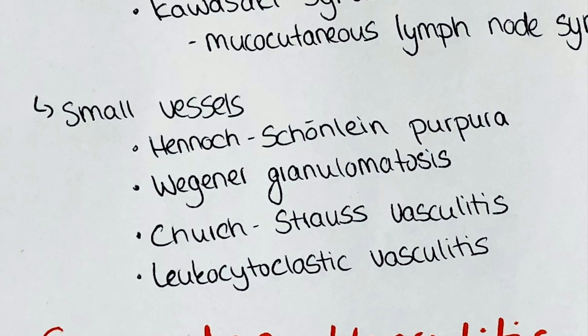In various organs, petechiae lead to symptoms such as bloody diarrhea if they are in the GI tract, hematuria if they are found in the kidneys, and edema if it occurs in the joints.